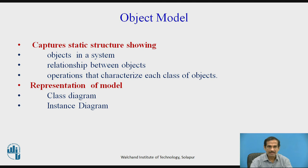The object model captures the static structure, showing the objects in a system, the relationships between the objects, and the operations that characterize each class of the particular objects. We represent these models in the form of two diagrams: a class diagram and an instance diagram. The class diagram shows all the classes and their relationships, while an instance diagram shows the objects present at a particular instance of time.